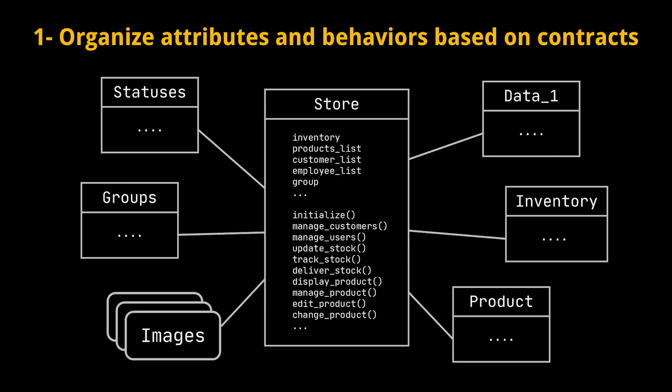To illustrate, consider a retail management system architecture where we can pinpoint a potential God Class named Store. In the diagram in front of us, the Store Class encompasses the entirety of the system's functionalities. Our first task involves recognizing cohesive sets of operations and attributes that represent distinct contracts. For instance, we could group operations associated with inventory and stock management, like update stock and track stock. Furthermore, we might identify all operations and attributes linked to individual products, including display product, manage product, and so forth.